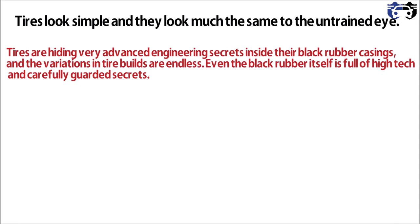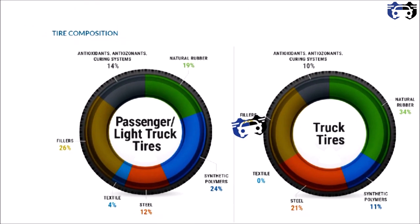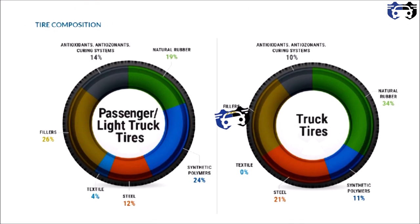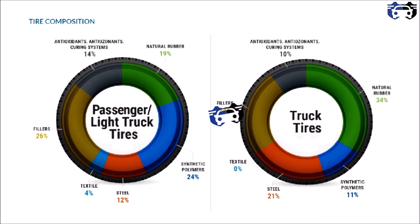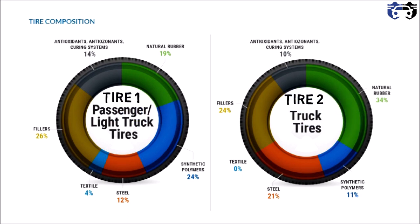Let's see the tire composition. I have two types of tires here: passenger or light truck tires (Tire 1) and heavy truck tires (Tire 2). If I compare the percentage of antioxidants, anti-ozonants, and curing system, in Tire 1 it is 14% and in Tire 2 it is 10%.